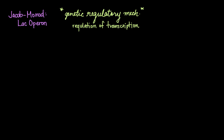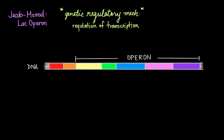An operon is a unit of genomic DNA containing a cluster of genes that are under control of a single regulatory signal, otherwise known as a promoter. These genes are co-transcribed into a single mRNA strand and either translated together or undergo trans-splicing to create single mRNAs that are translated separately. Basically, genes in an operon are expressed either altogether or not at all.